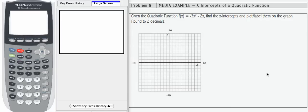In problem 8, we're going to work with the same quadratic function we did in problems 2 and 5. In this problem, we're going to find the x-intercepts and plot and label them on our graph.